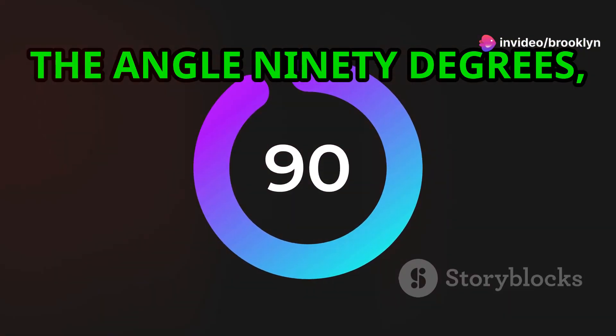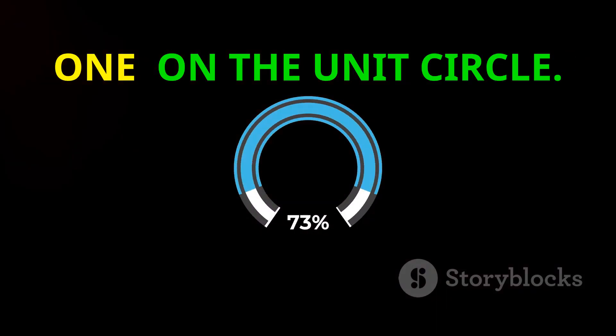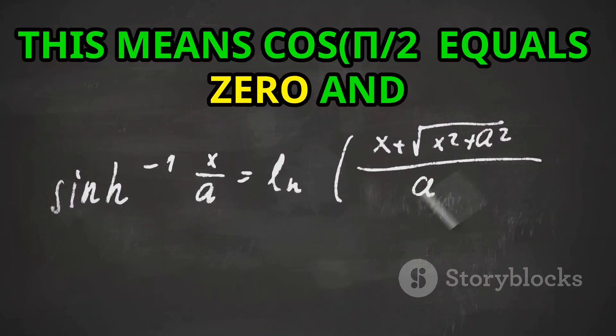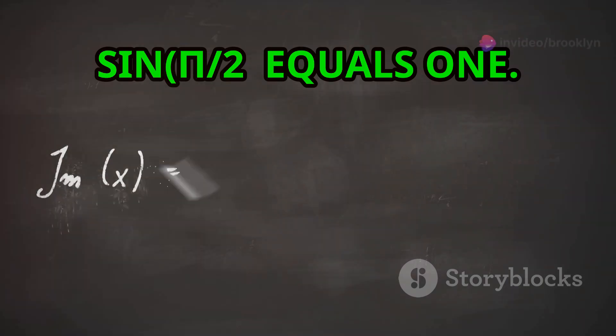Similarly, the angle 90 degrees, or π/2 radians, corresponds to the point (0, 1) on the unit circle. This means cos π/2 equals 0 and sin π/2 equals 1.